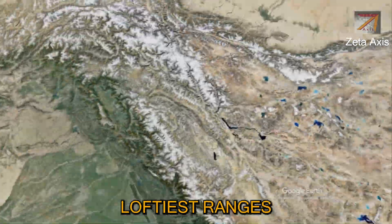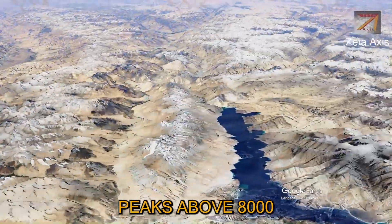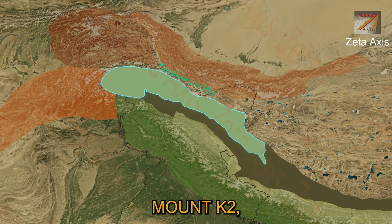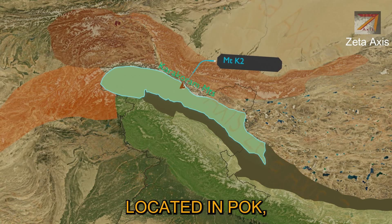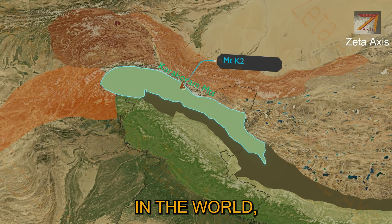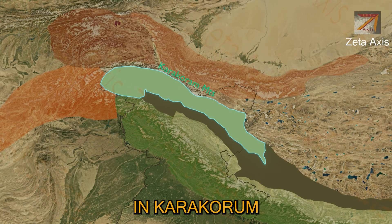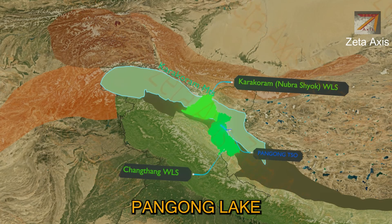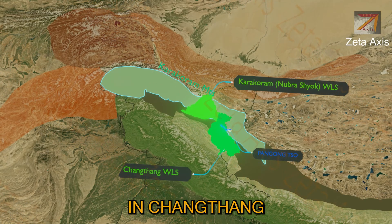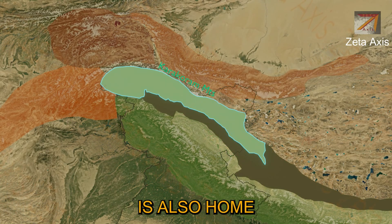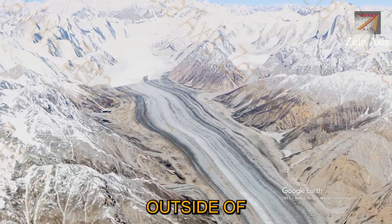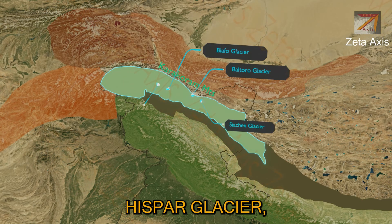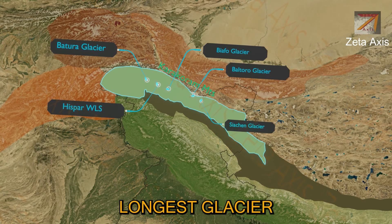The Karakoram ranges are one of the loftiest ranges in the world, with several peaks above 8000 meters and elevation rarely falling below 5500 meters. Mount K2, also called Mount Godwin-Austen, located in POK, is the second highest mountain peak in the world and is located in the Karakoram range. In the Karakoram range we find Karakoram Wildlife Sanctuary and Changtang Wildlife Sanctuary. The famous Pangong lake is also located in the foothills of the Karakoram range in the Changtang Wildlife Sanctuary. Karakoram is also home to many large glaciers outside polar regions, including Siachen Glacier, Biafo Glacier, Hispar Glacier, and Batura Glacier. The Siachen Glacier is the longest glacier of India.